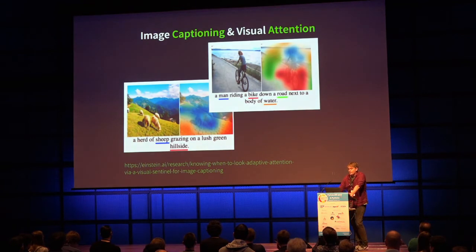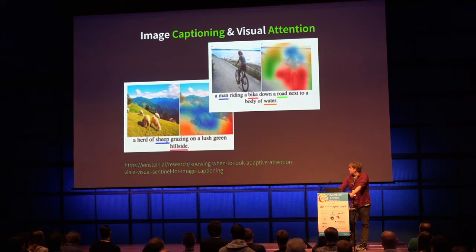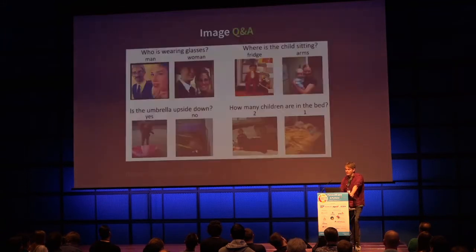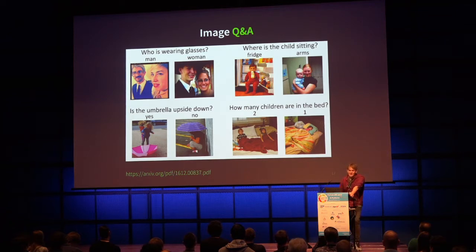There's also really interesting stuff happening at the intersection of NLP and computer vision. Given an image, can we produce a sentence description of what it contains? You can use an attentional mechanism to look at which part of the image is being attended to when that part of the description is being generated. My slides are on my Twitter, which I'll show again at the end — there's a link on pretty much every slide.